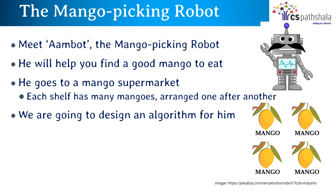Imagine your mother has asked you to go to the market and bring back some mangoes, but you are very tired. Meet Arm Bot, the mango picking robot. He will go to the market and find you a good mango to eat. Arm Bot goes to a mango supermarket where each shelf has many mangoes arranged one after the other. To help him choose a good mango, we will design an algorithm.